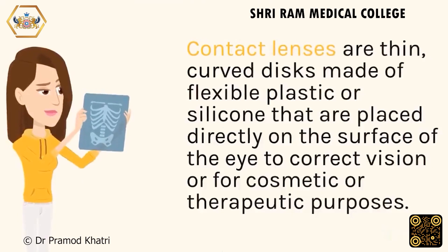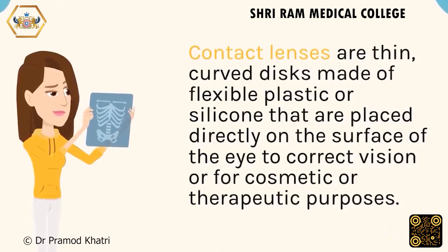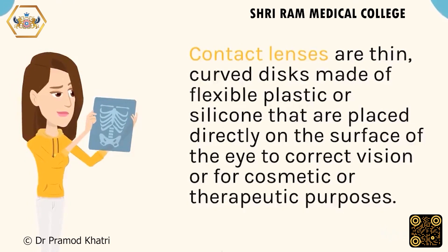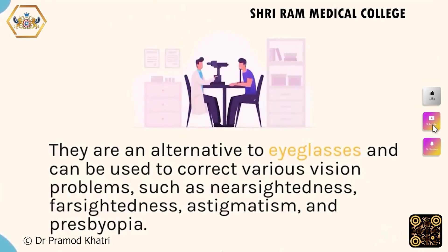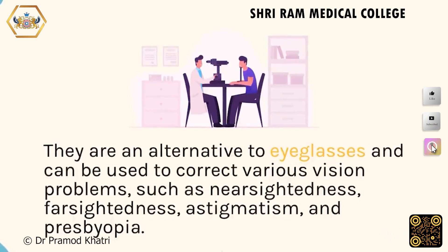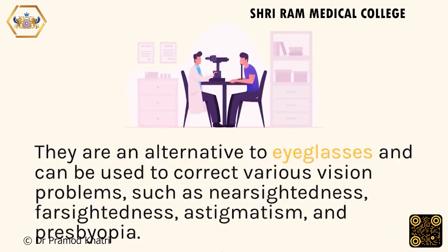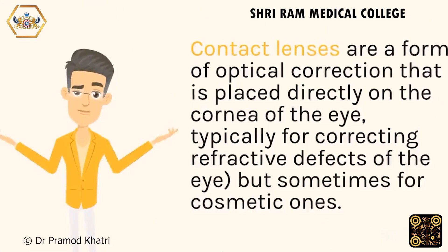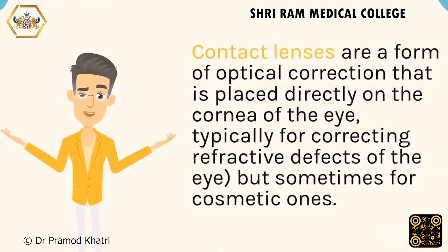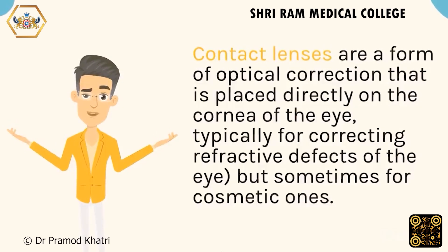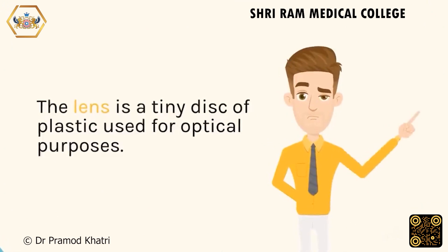Contact lenses are thin, curved discs made of flexible plastic or silicone that are placed directly on the surface of the eye to correct vision, or for cosmetic or therapeutic purposes. They are an alternative to eyeglasses and can correct various vision problems such as nearsightedness, farsightedness, astigmatism, and presbyopia. Contact lenses are placed directly on the cornea, typically for correcting refractive defects, but sometimes for cosmetic ones. The lens is a tiny disc of plastic used for optical purposes.